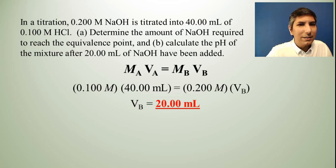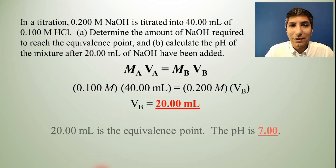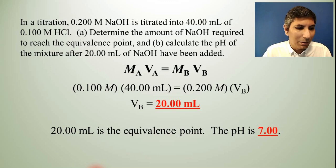Now part B asks, calculate the pH of this mixture after 20 milliliters of sodium hydroxide have been added. Well, we know that 20 milliliters, that's the equivalence point, isn't it? We just calculated that. So at the equivalence point in a strong acid, strong base titration, the pH is always 7, isn't it? As long as we're at 25 degrees Celsius. So that's the answer. It is 7.00.